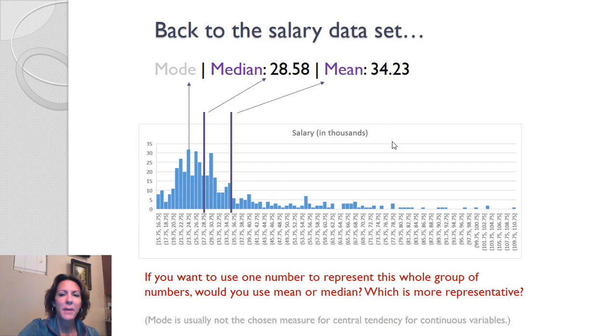So what's happening is we have some very extreme scores that are impacting the mean. When we have extreme scores, the mean starts to become not the best measure of central tendency. These extreme scores are pulling the mean. And so when we have skewed data, we're going to use the median as our best measure of central tendency.